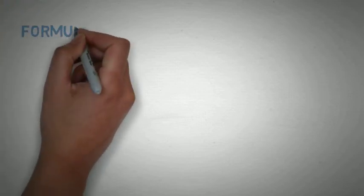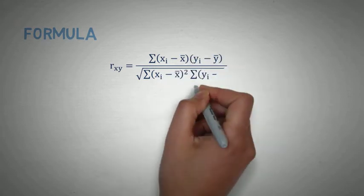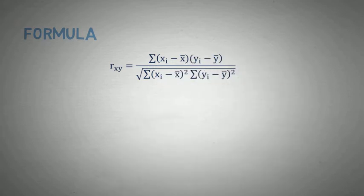Now let's see the formula to calculate the correlation. R is equal to summation of (xi minus x bar)(yi minus y bar) divided by the square root of summation of (xi minus x bar) squared times summation of (yi minus y bar) squared.